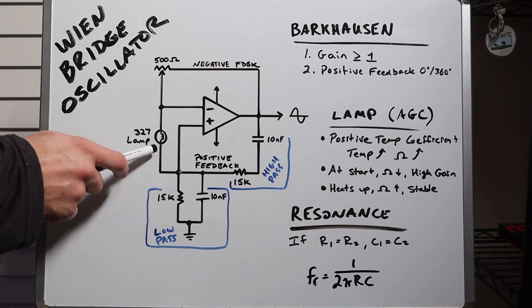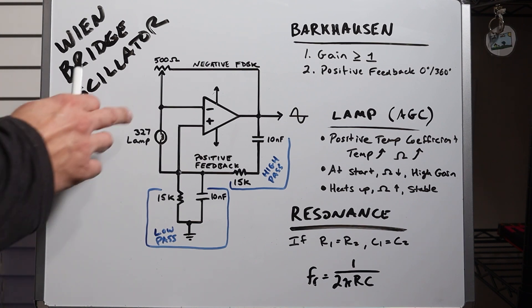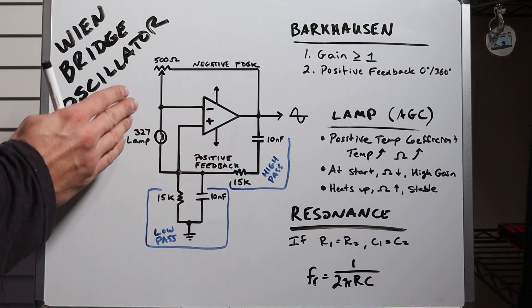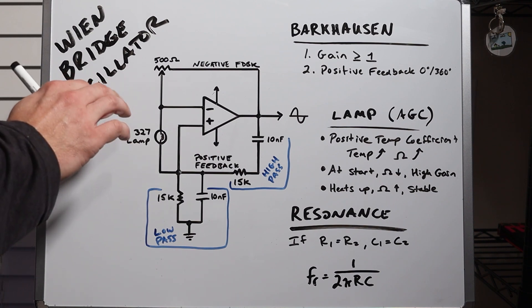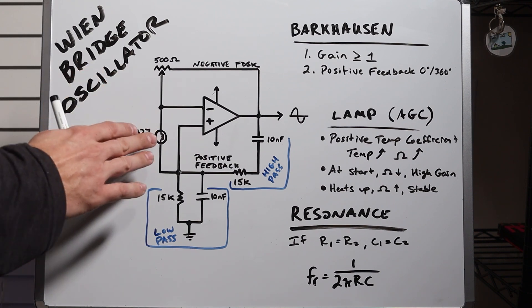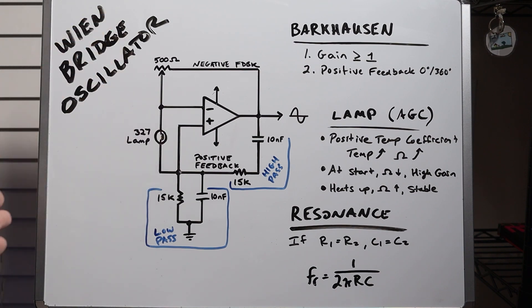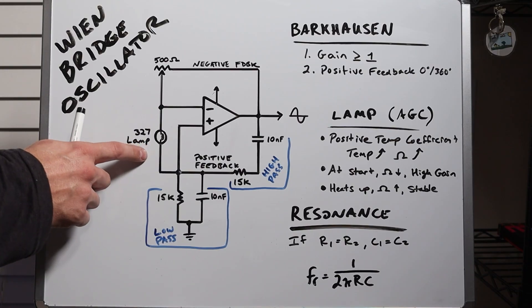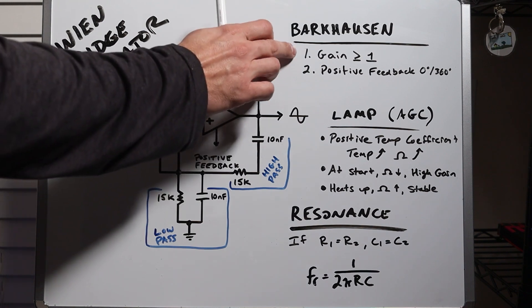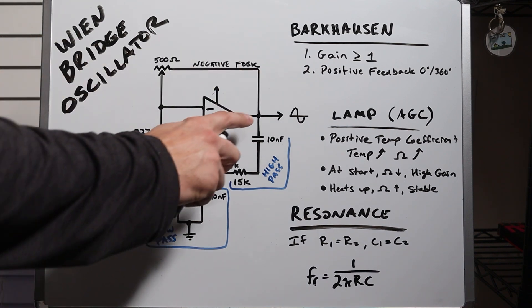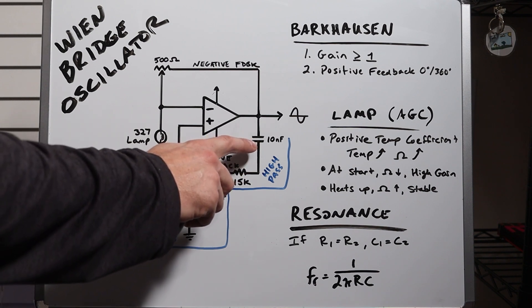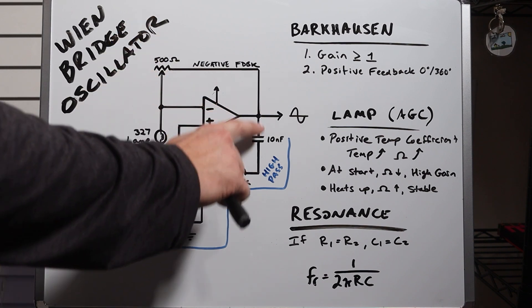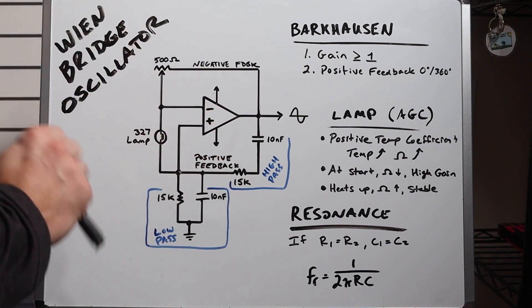We have a lamp here that acts as an automatic gain control circuit, and it has a positive temperature coefficient. That means that as we put current through it, it heats up and the resistance increases. When you first turn it on, the resistance is low. That's important because when the resistance is low, when you first turn this thing on, we have predominantly positive feedback, starting that oscillation. Once this lamp starts to self-heat and stabilize, our gain approaches one if we have this resistor set correctly. Now we have this positive feedback loop, and we have specific values for resistors and capacitors in here that select the fundamental frequency that gets fed back to the input so that it only oscillates at the frequency we tell it to.